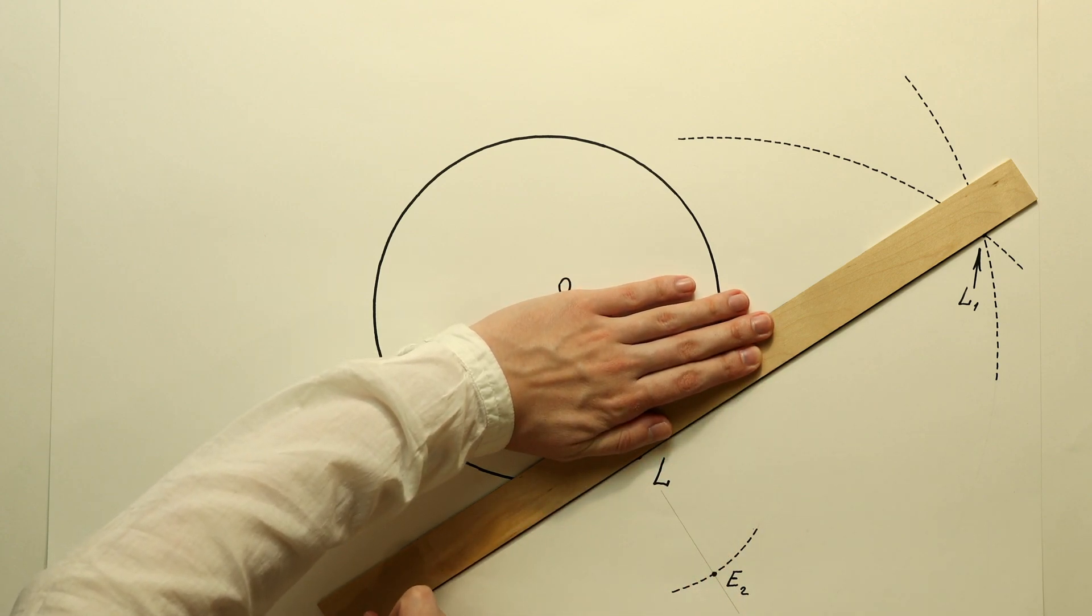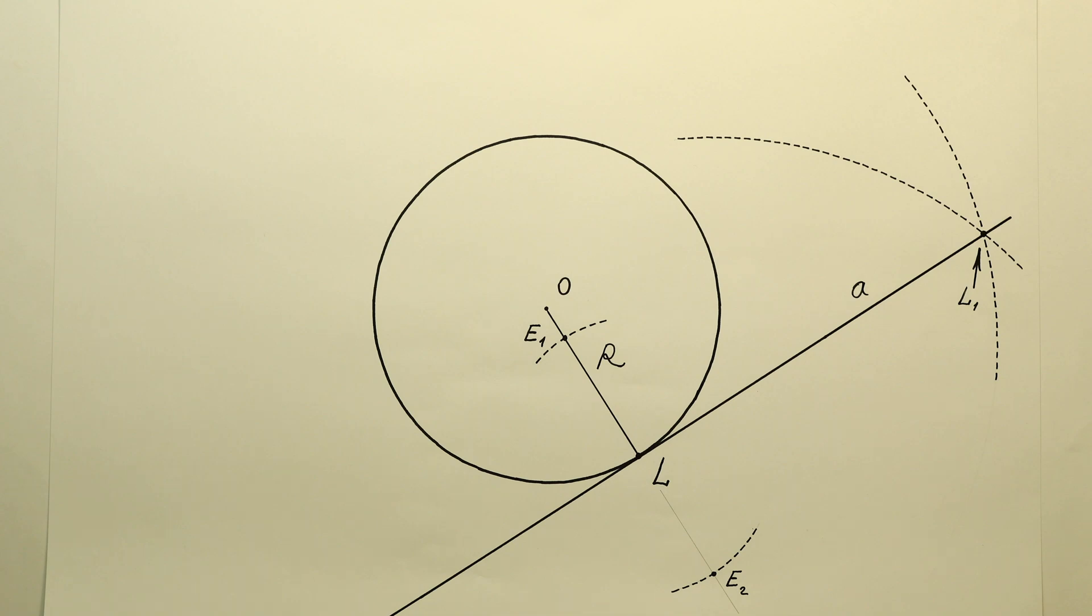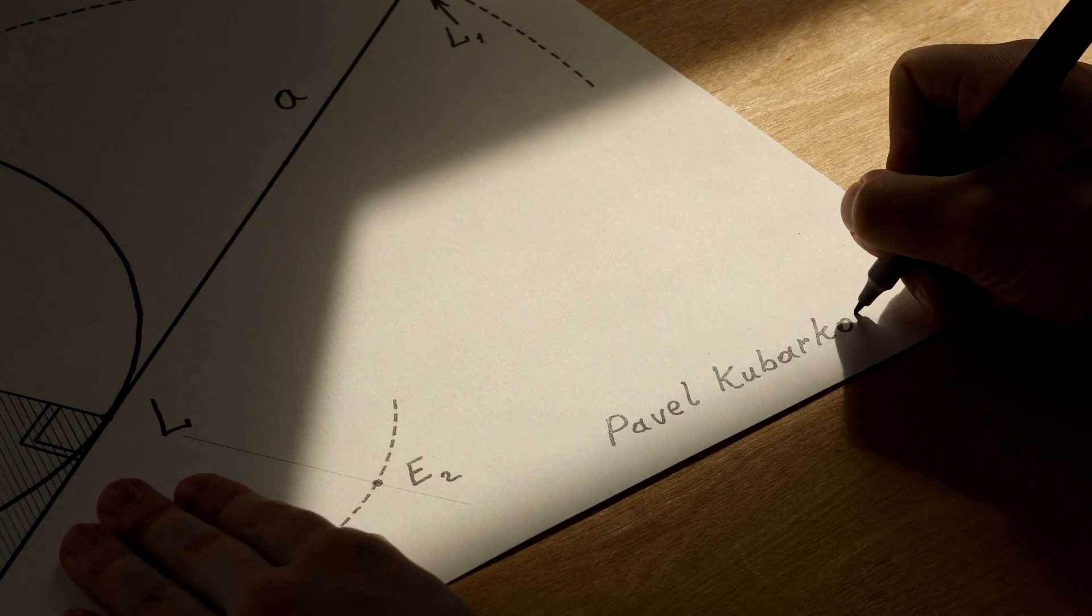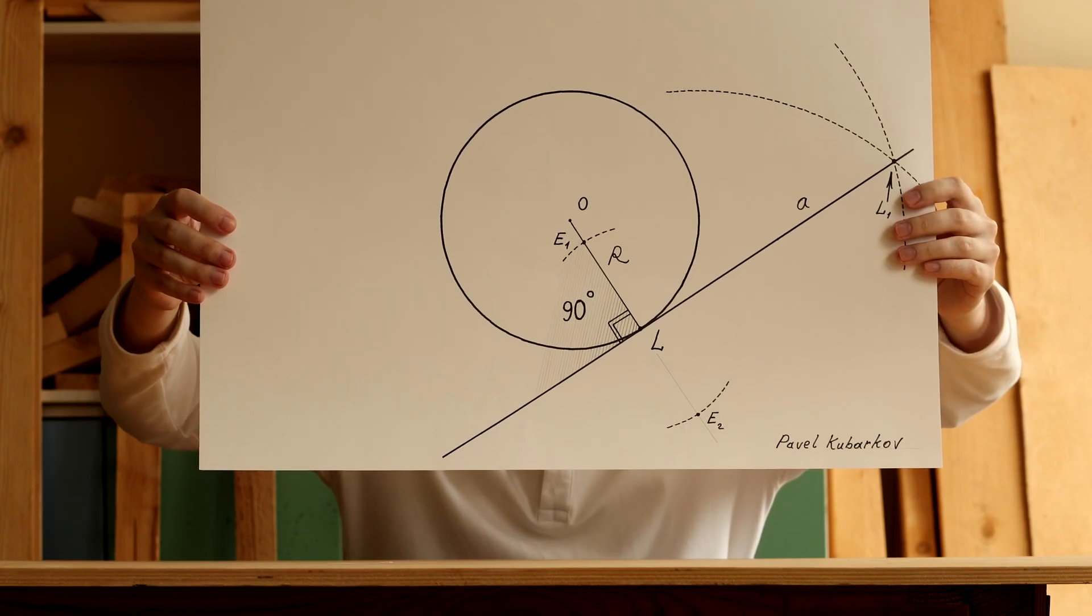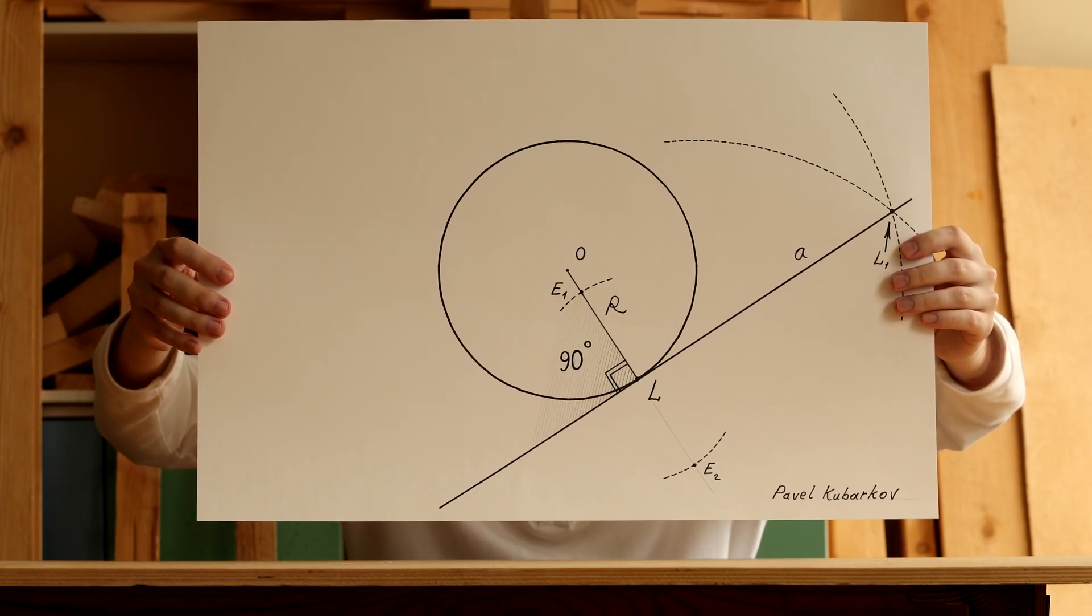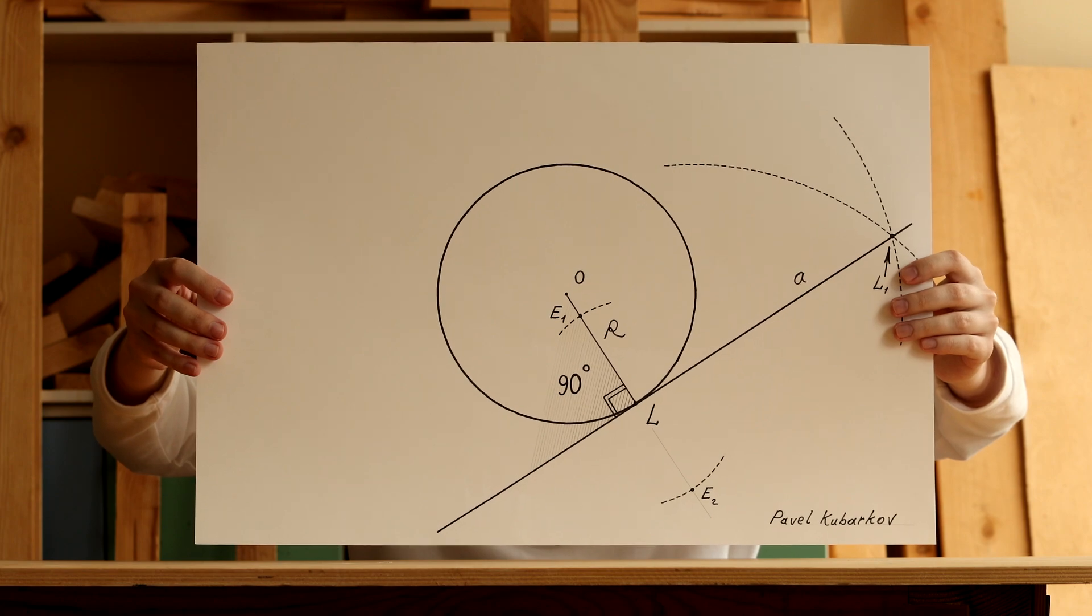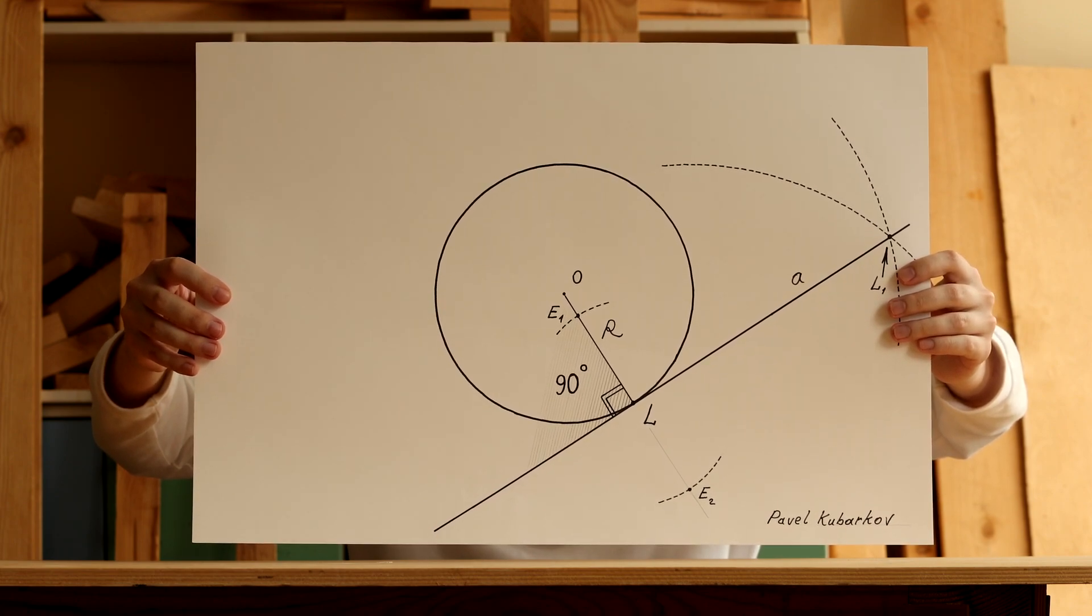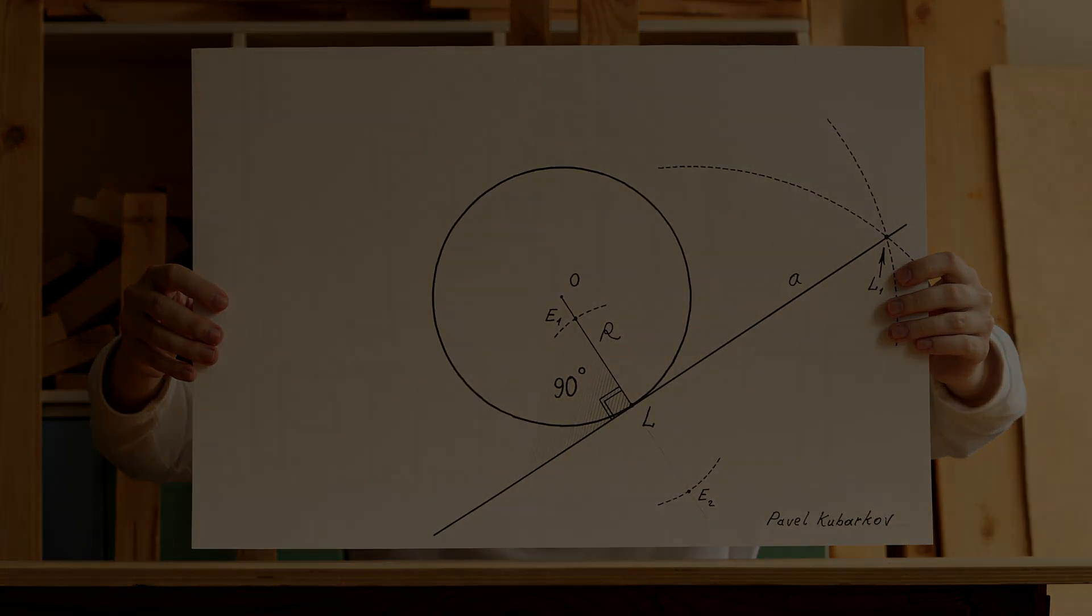Two mismatched points define a straight line. Performing such simple geometric construction it is possible to construct a tangent line to a circle at a given point on the circle. Video created by Pavel Kubarkov in 2024 year.